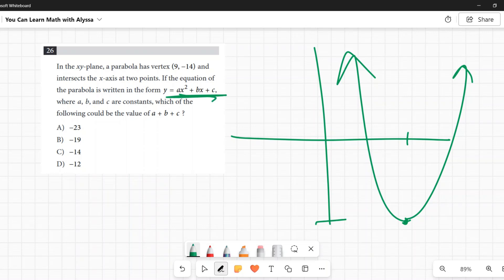In that ax squared plus bx plus c, that a must be positive because it's opening up. Okay, how would I write an equation for this parabola? I don't have enough to write a full equation for it, but I can get started.